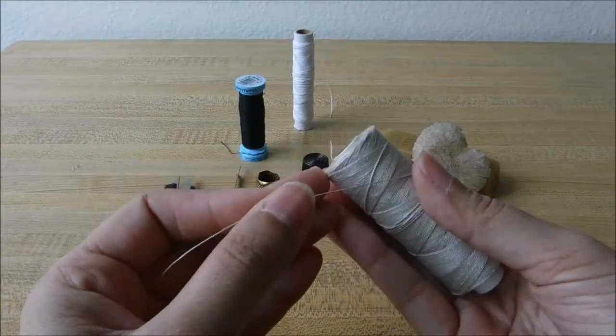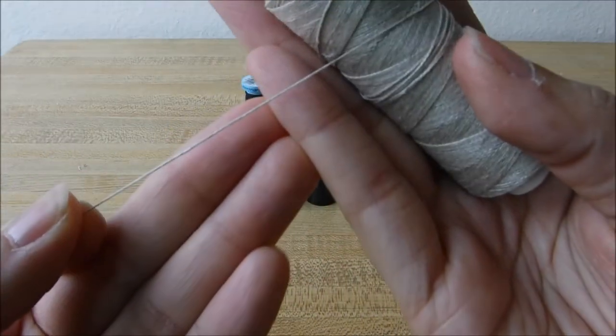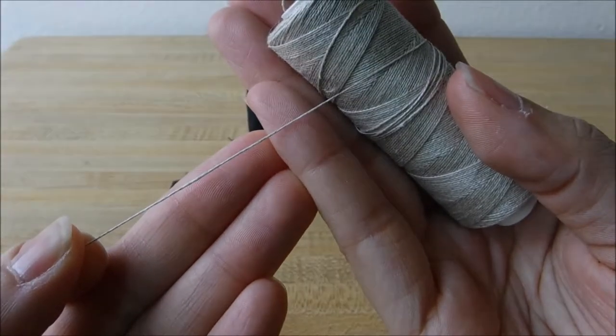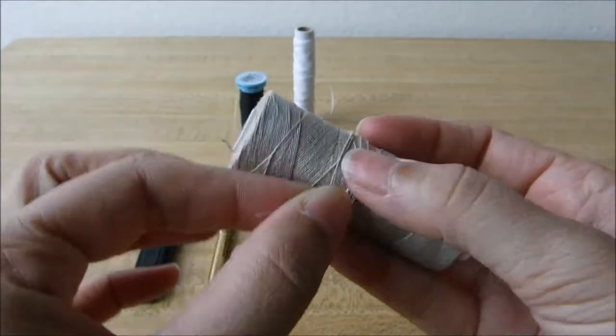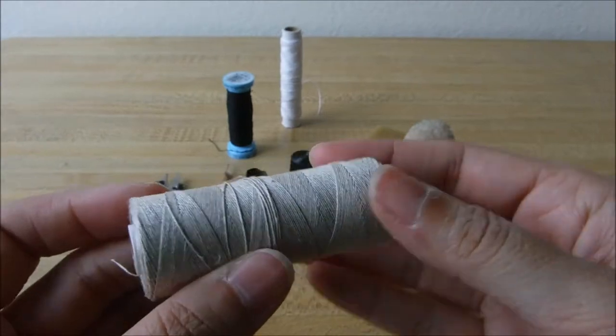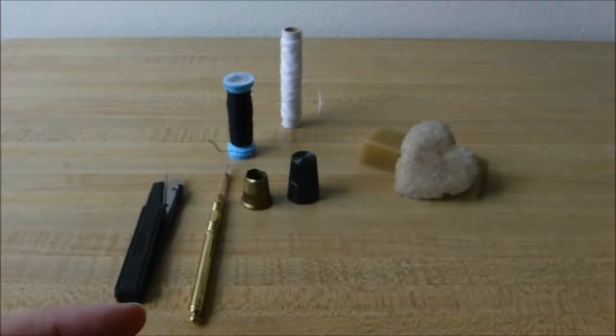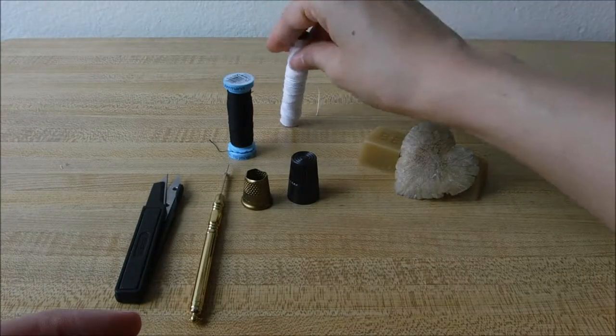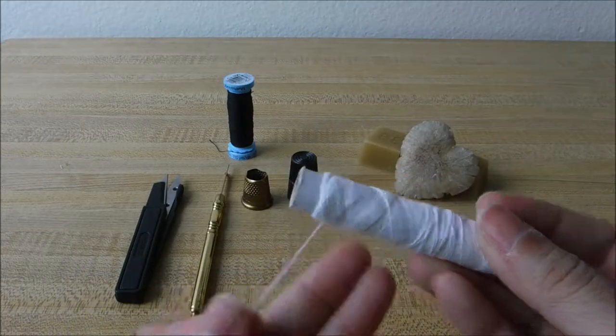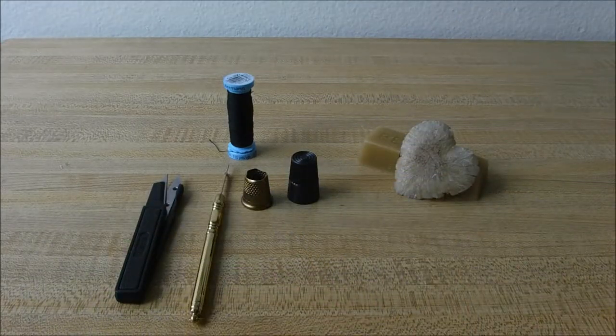I do also have the same brand linen thread, Londonderry. This is a 103. Again, the linen thread is kind of backward. I will tell you all about that in that thread video. I also have a spool of the white. This is a heavier weight thread that I use for wool items.